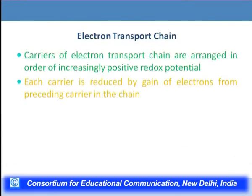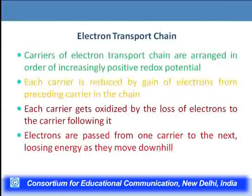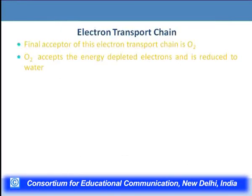All carriers of the electron transport chain are arranged in order of increasingly positive redox potential, so electrons are transferred from carriers with higher redox potential to those with lower. Each carrier is reduced by gaining electrons from the preceding carrier and then reduces the subsequent one. Electrons flow from FMN to ubiquinone, then cytochrome B, cytochrome C1, cytochrome C, and cytochrome A3, with the final acceptor being oxygen, which is converted to water. Three steps marked by red arrows show major energy release during electron transfer.